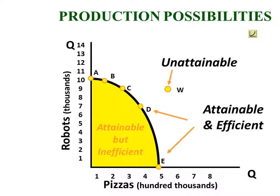What about the point of allocative efficiency we were talking about earlier? Theoretically we could choose anywhere on the curve, but we wouldn't choose A or E because that would represent all consumer goods or all capital goods — we definitely need a mix. Two societies with highly similar populations, education levels, and economic resources might choose completely different points for allocative efficiency. This is a normative decision; societies will weigh the marginal benefits and marginal costs of additional units based on their preferences.